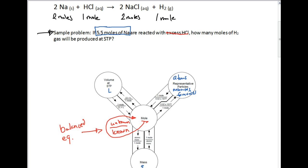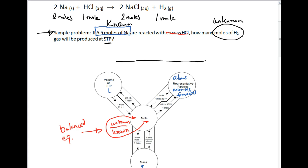As long as it says excess, just ignore it. The question asks how many moles of H₂ gas will be produced at STP, so we are looking for moles — that's our unknown. The phrase 'at STP' gives us permission to use the mole road. We're going to make a picket fence and put our known — 5.5 moles of Na — and then our unknown, moles of H₂. This tells us where to start and end on the mole road.